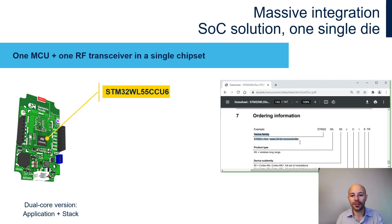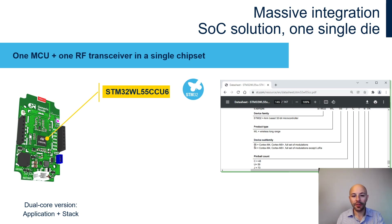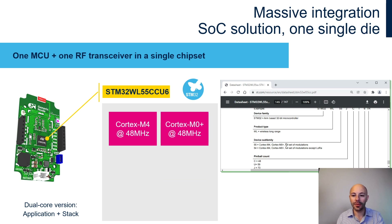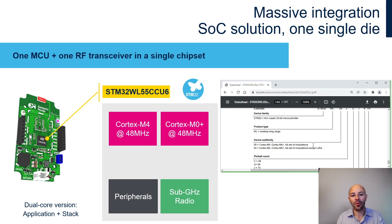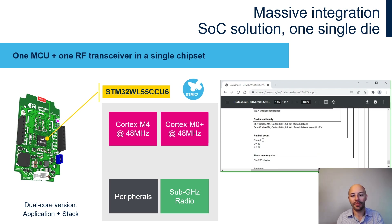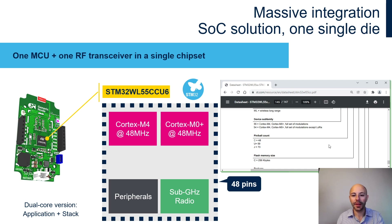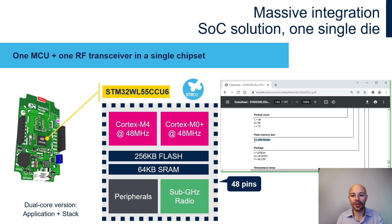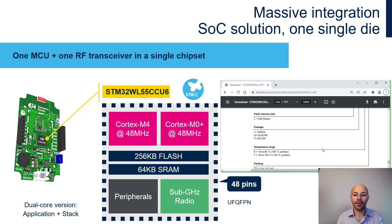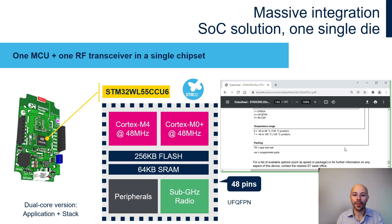For instance, STM32 is the device family. Then WL stands for wireless long range. The device sub-family 55 means Cortex-M4 plus Cortex-M0+ with a full set of modulations — so a dual-core product with full modulation. Continuing, we have 48 pins, flash memory size of 256 Kbytes, package type UFQFPN, and a temperature range of minus 40 to 85 degrees Celsius.